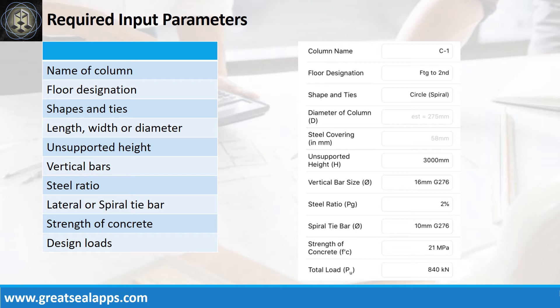Vertical bars, 16 mm bar at grade 276. Steel ratio, 2%. Spiral tie bars, 10 mm bar at grade 276. Strength of concrete, 21 MPa. And factored actual load, 840 kN.